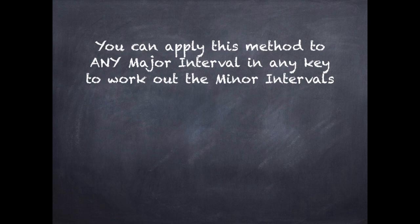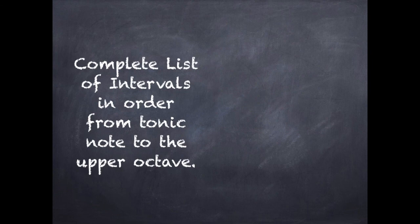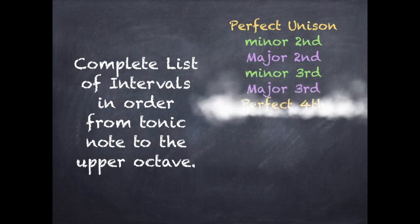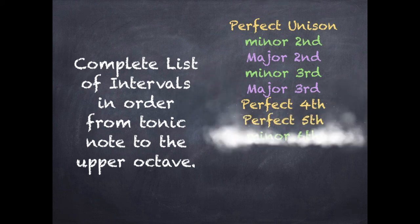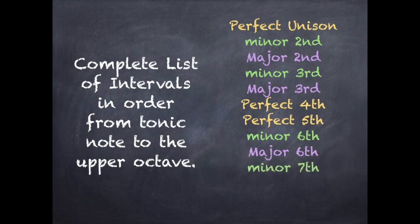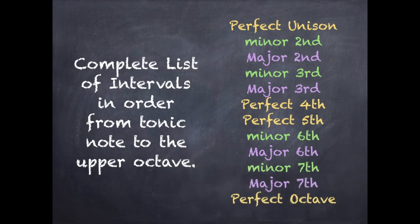As you can see, you can apply this method to any major interval in any key to work out its minor interval. The complete list of intervals in order from tonic to upper octave: perfect unison, minor second, major second, minor third, major third, perfect fourth, perfect fifth, and perfect octave.